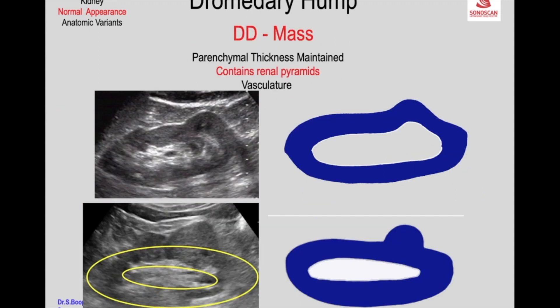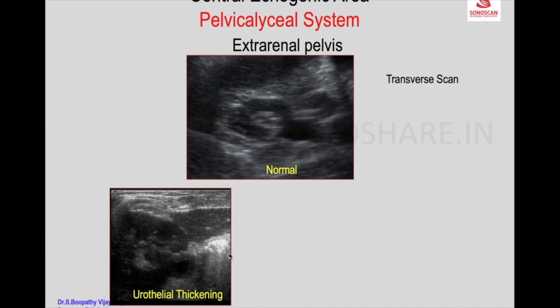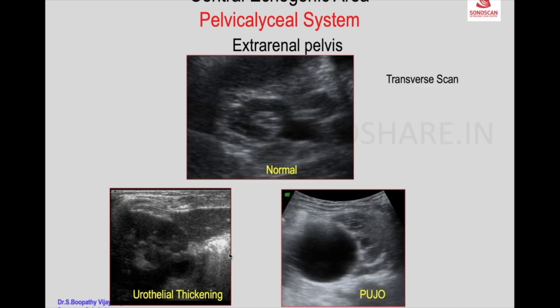How is it differentiated? The parenchymal thickness is maintained, as shown. Other considerations include a sloughed papilla, fungus ball, or papillary TCC — in this case it turned out to be papillary TCC. This appearance can also be thickening of the wall. You see PUJ obstruction with a hugely dilated extra-renal pelvis, whereas the calyces are not much dilated because the pressure is taken by the extra-renal pelvis.